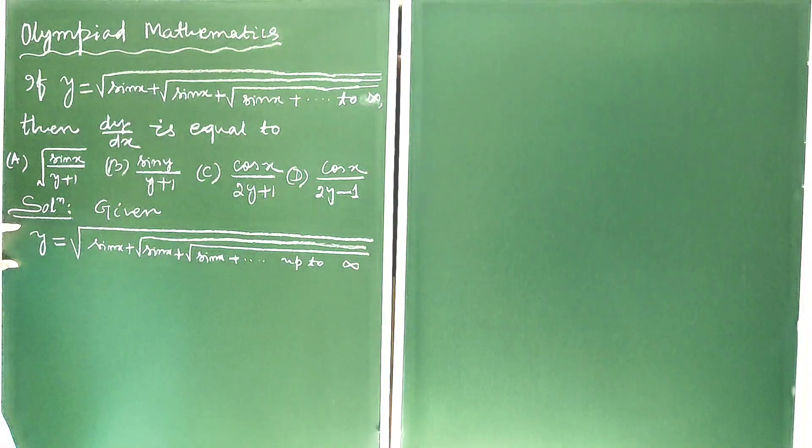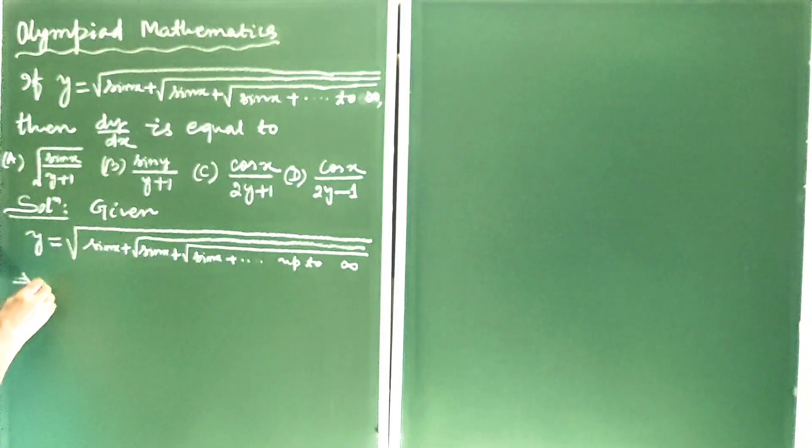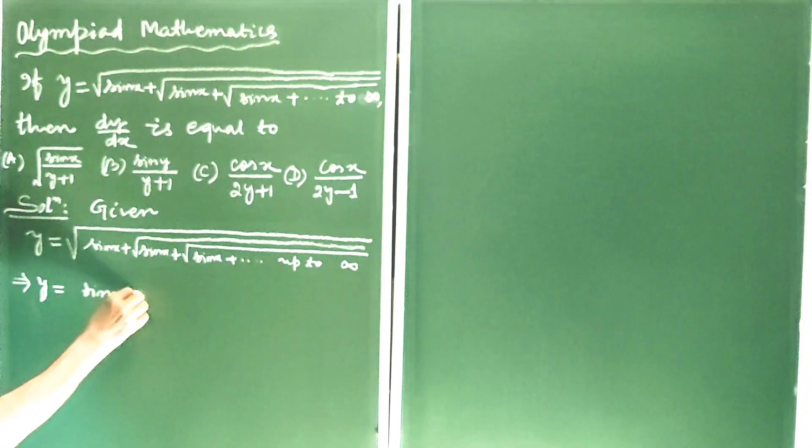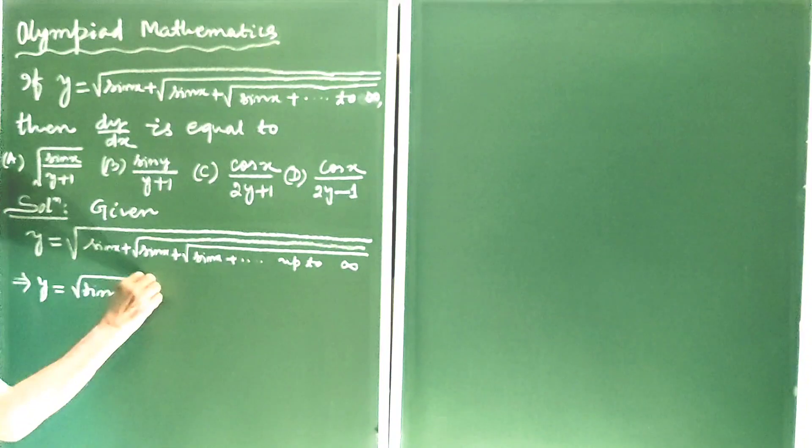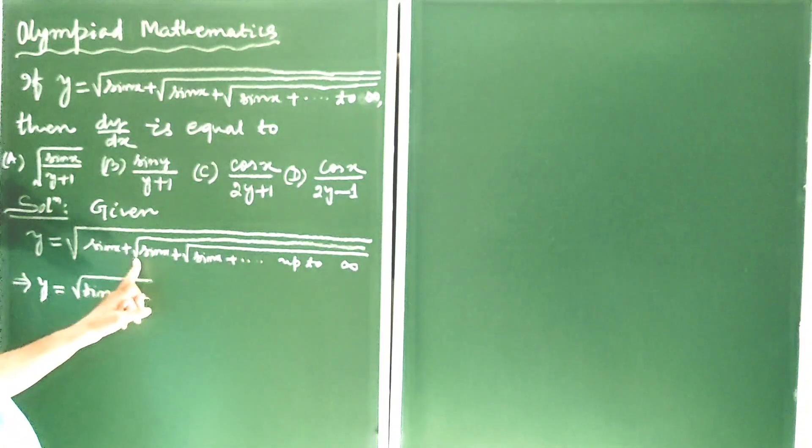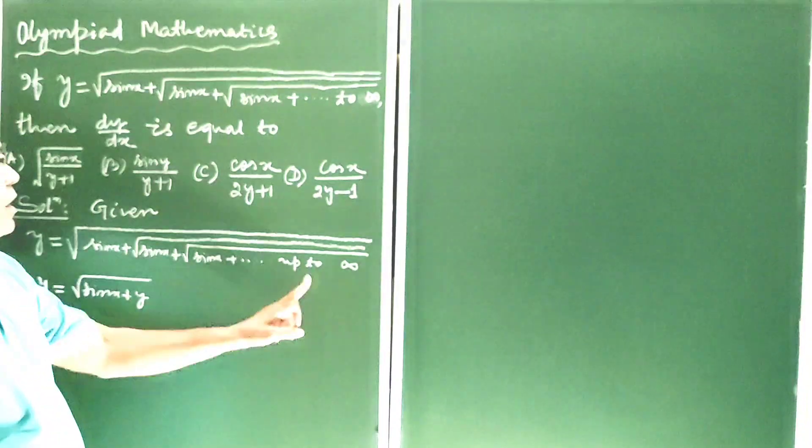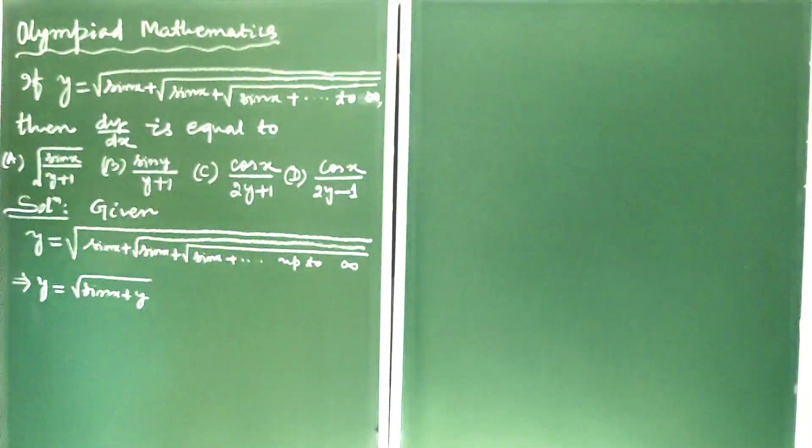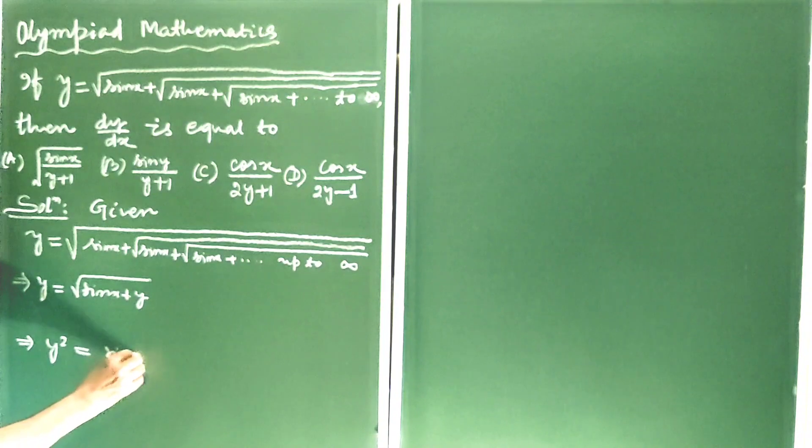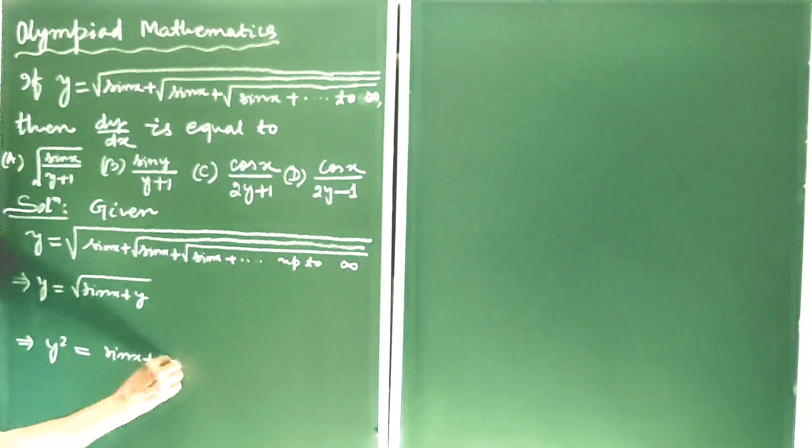Given this expression for y, we can write y is equal to square root of sin x plus y, because the expression from the second term is also up to infinity. Now squaring both sides, we get y squared is equal to sin x plus y.